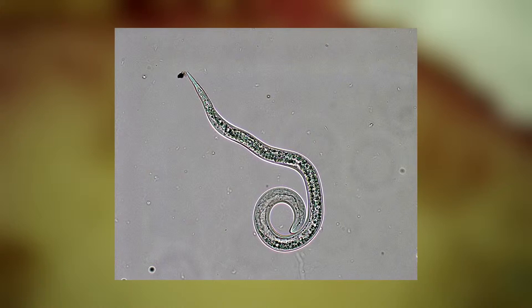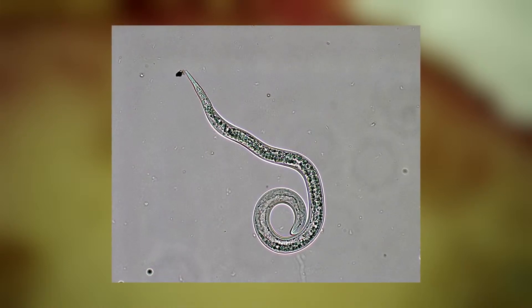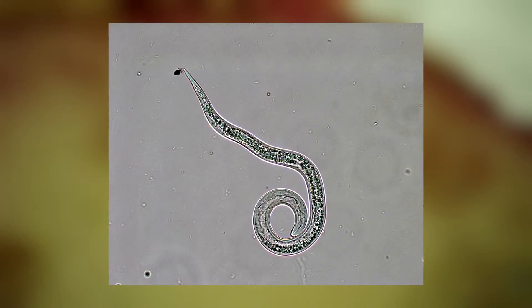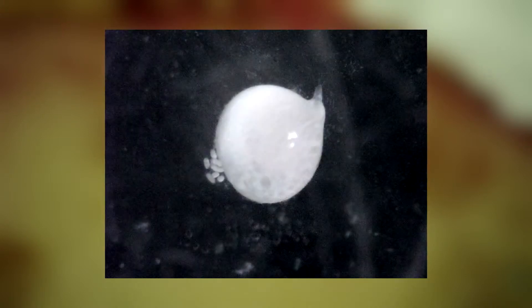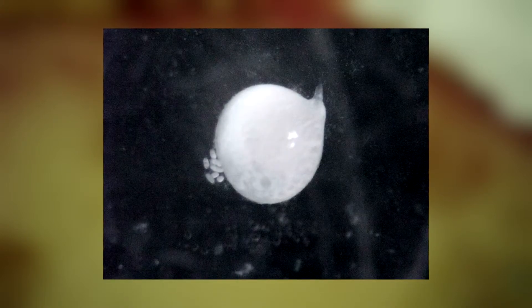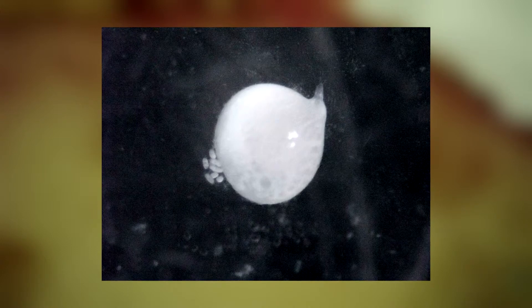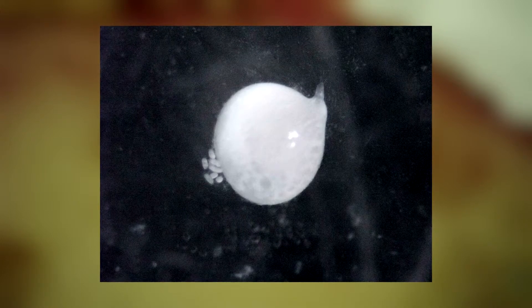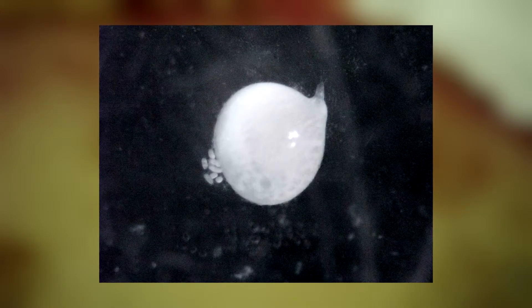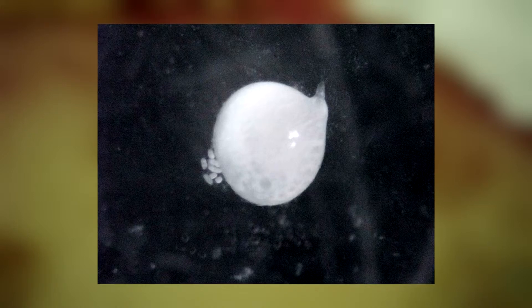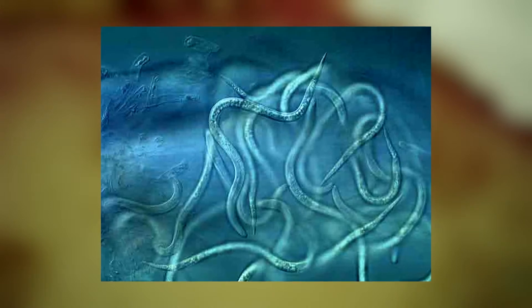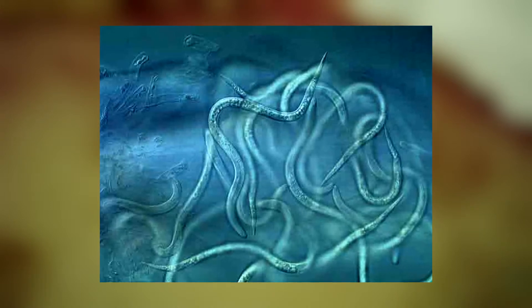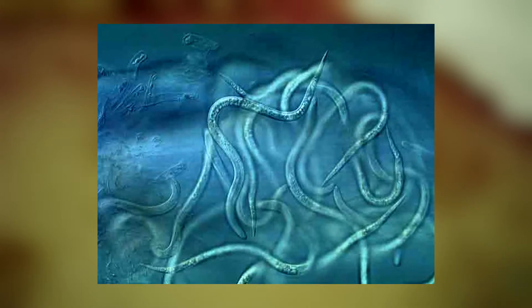Внутри корня личинка теряет червеобразную форму, трижды линяет и превращается во взрослую самку. Взрослые самки имеют грушевидную форму тела серебристо-белого цвета и внедрены в ткани растения-хозяина. Новые яйца продуцируются самкой в желатиноподобную массу. Взрослые самцы имеют тонкую стройную форму тела; после четвёртой линьки они покидают корень и локализуются в ризосфере.